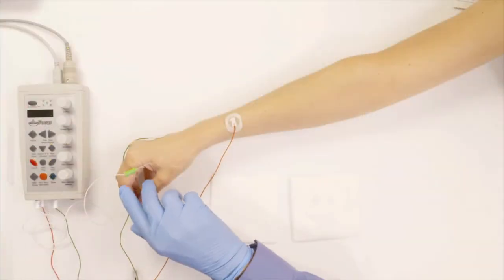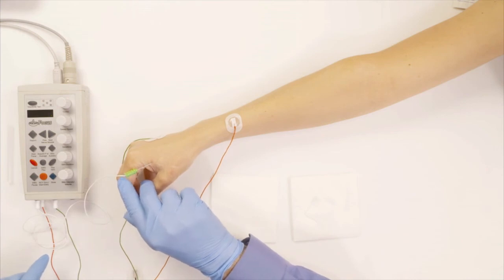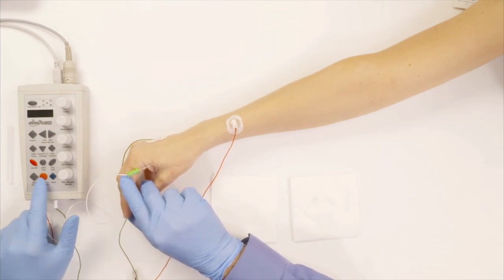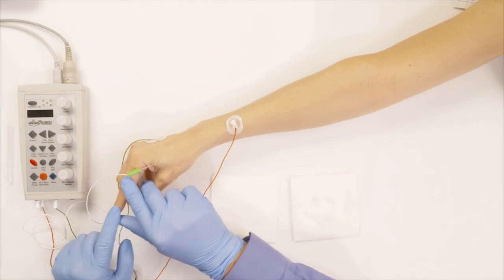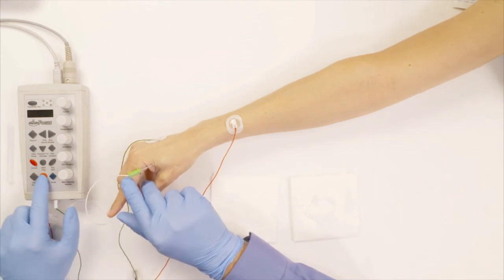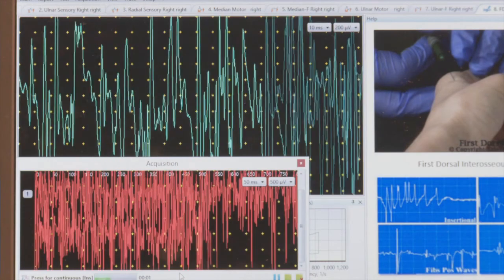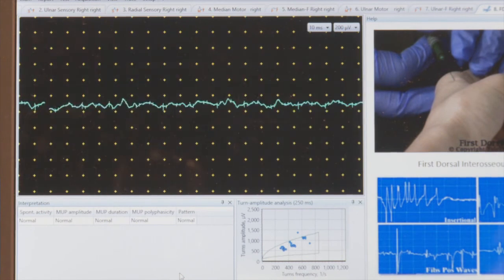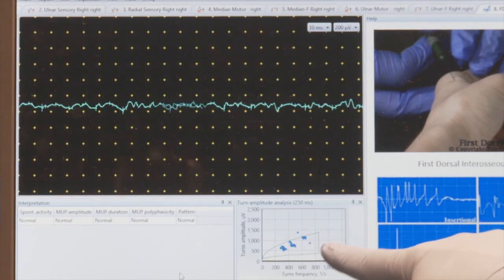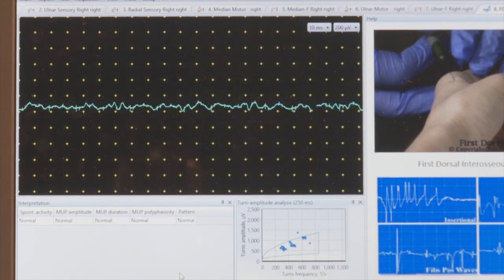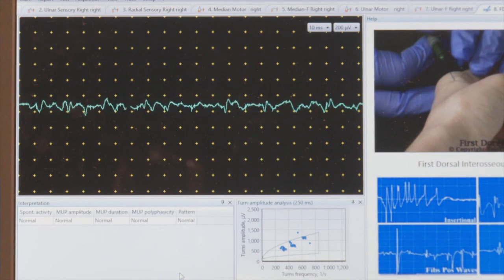And the last thing that I do is ask her to put full activation all the way up. Notice that I'm holding her finger to make sure she gives her enough resistance. And I take that. And now you can see that the dots are showing up at the right of the cloud, essentially. This looks within normal limits. And that was the first dorsal interosseous.